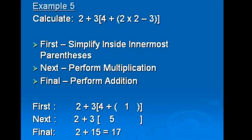In example 5, if we're asked to calculate 2 plus 3 times, open bracket, 4 plus 2 times 2 minus 3, close bracket, first we simplify what's inside the parenthesis. Next, we'll perform a multiplication, and the final step would perform an addition. So in this case, first it would be 2 plus 3 times, open bracket, 4 plus 1, close bracket. Next, it would be 2 plus 3 times 5. Then the final step would be 2 plus 15, which gives us an amount of 17.